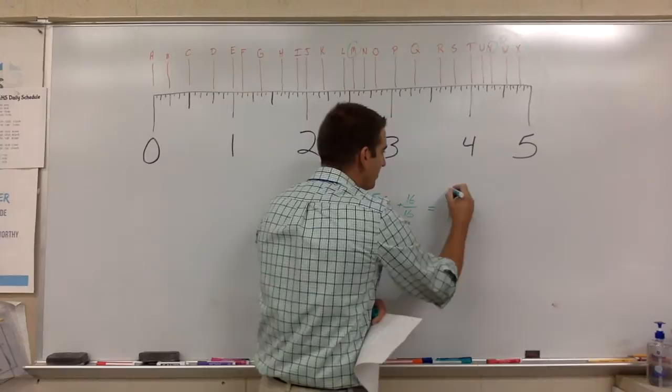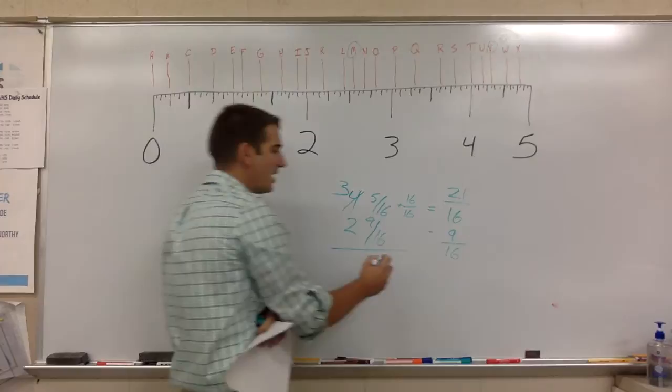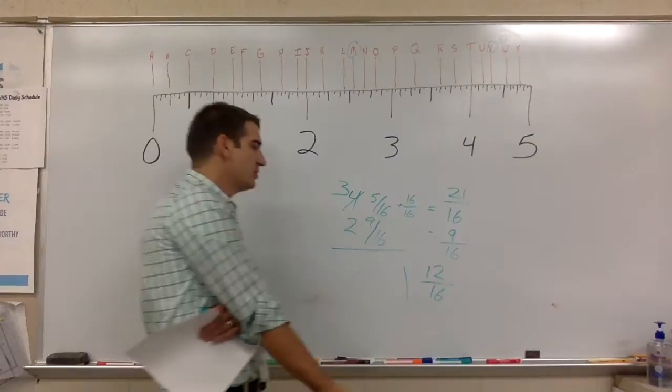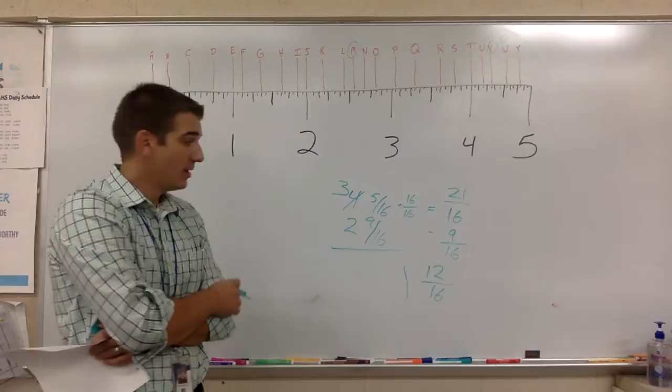Five plus sixteen on top gives us twenty-one. And now, we can take twenty-one minus nine sixteenths. Twenty-one minus nine is going to give us twelve sixteenths. Three minus two is going to give us one. And, we're almost there. All we got to do is reduce this fraction. Remember I talked about in class, if we ever have an even number on top, we're not down as far as we can go. So, we got to get it to an odd.